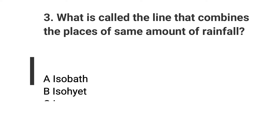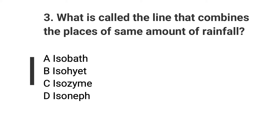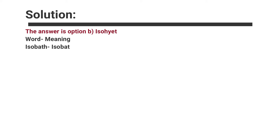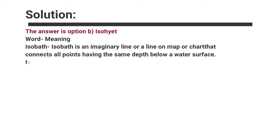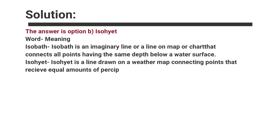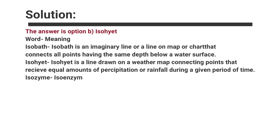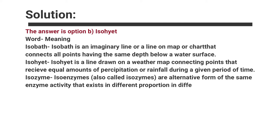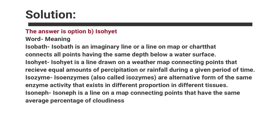Question number three: What is the line called that connects places of the same amount of rainfall? Options are A. Isobath, B. Isohyet, C. Isoenzyme, D. Isoneph. The answer is option B, Isohyet. Isobath is an imaginary line on a map or chart that connects all points having the same depth below a water surface. Isohyet is a line drawn on a weather map connecting points that receive equal amounts of precipitation or rainfall during a given period of time. Isoenzymes are alternative forms of the same enzyme activity that exist in different proportions in different tissues. Isoneph is a line on a map connecting points that have the same average percentage of cloudiness.